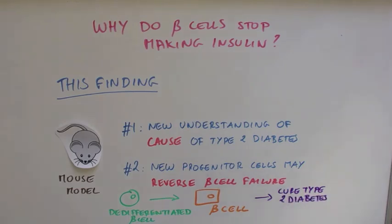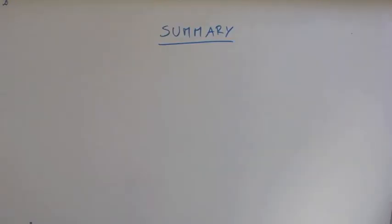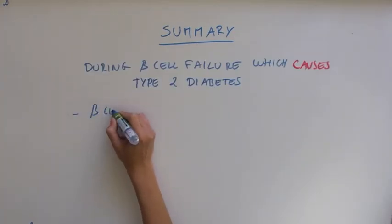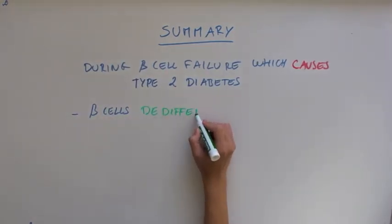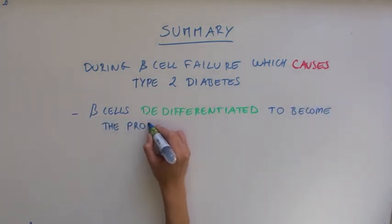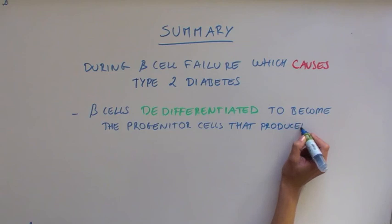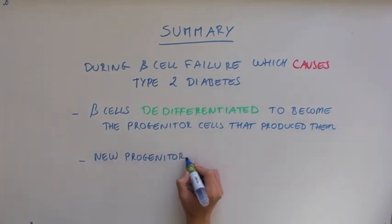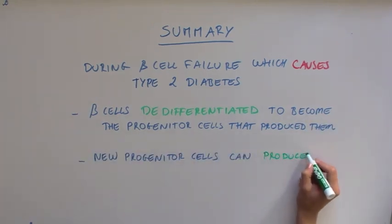So what did this study show? This study showed that during beta cell failure, which causes type 2 diabetes, beta cells that normally make insulin de-differentiate to become the progenitor cells that created them. These new progenitor cells now have the ability to produce other cells for the pancreas.